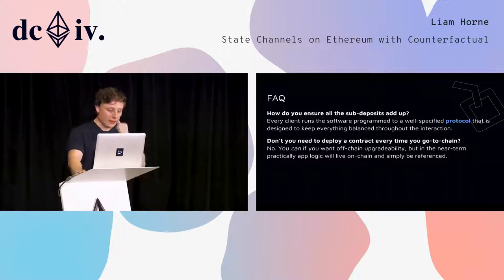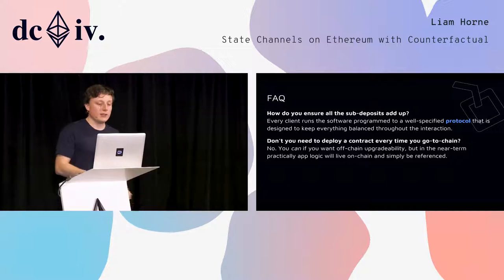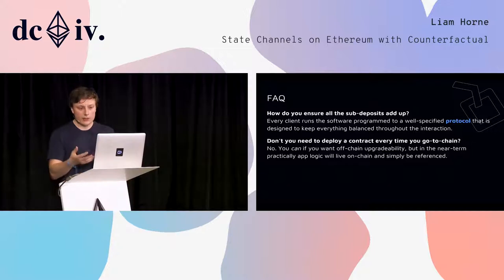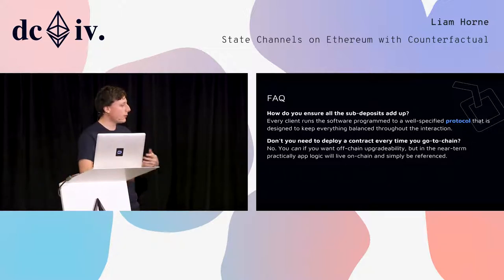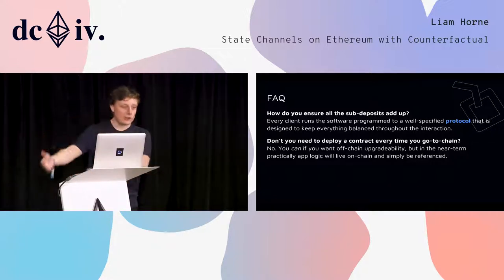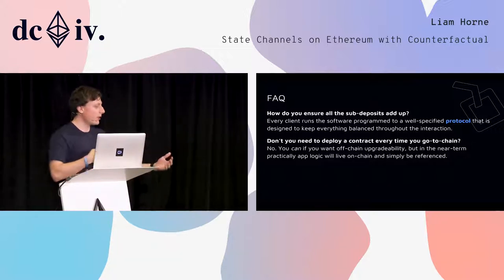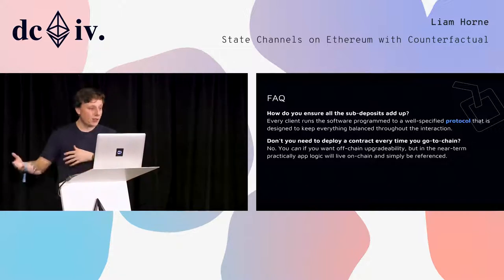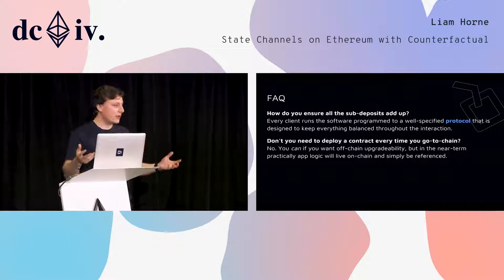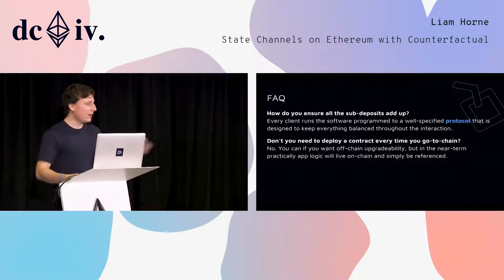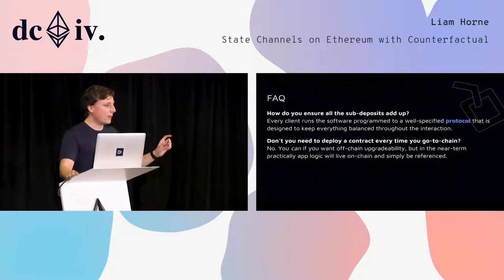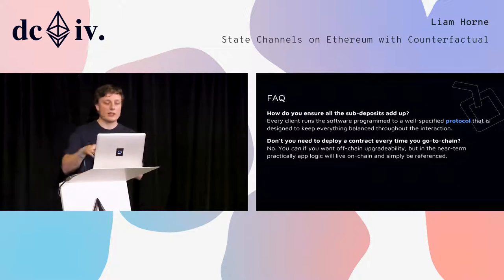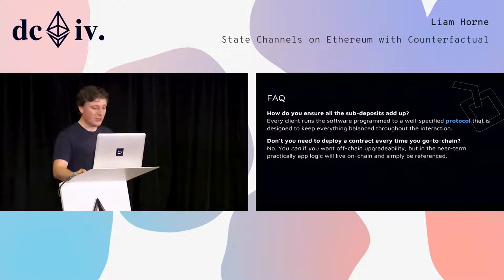Two FAQs I always get: first, how do you ensure all the sub-deposits add up? Yes, it's complicated, and that's what warrants a protocol to be defined. You need a protocol for participants of a state channel to communicate — how do you install an application, how do you uninstall it, what are the specific commitments? Second, a bit of misinterpretation from the paper: don't you need to deploy a contract every time? The answer is no. In practice, you deploy a contract on-chain that has the rules defined for the game ahead of time, and that's a one-time thing per application. We've introduced in the paper a notion called counterfactual instantiation, which allows you to do this off-chain. It's a useful technique for performance and upgradability, but not necessarily a must-have.